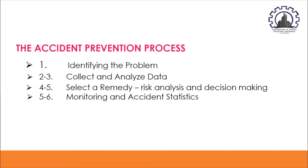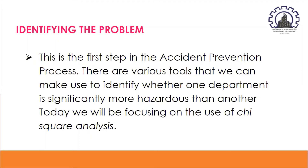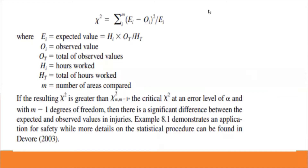Identifying the problem is the first step in the accident prevention process. Various tools can be used to identify whether one department is significantly more hazardous than another — today we focus on the chi-square analysis. The formula is: x² = Σ(E - O)² / E, where E is the expected value and O is the observed value. If the resulting x² is greater than the critical x² at error level A and M minus 1 degrees of freedom, there is a significant difference between expected and observed injury values.